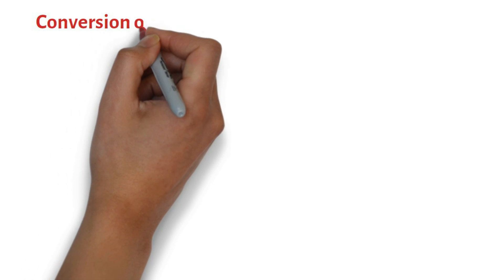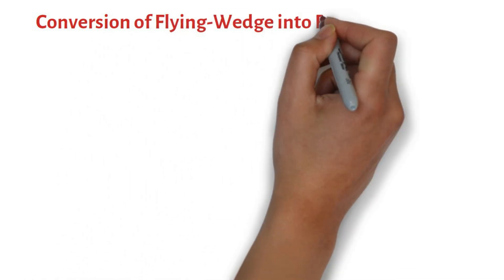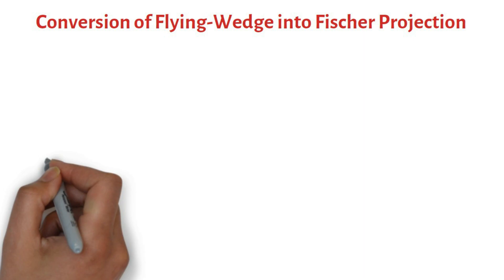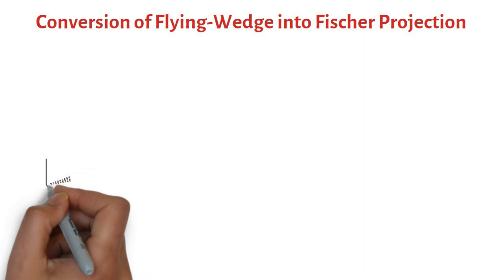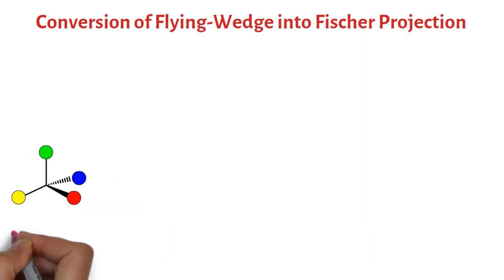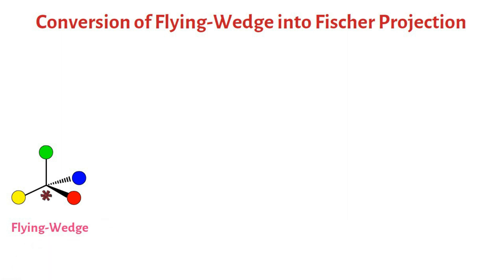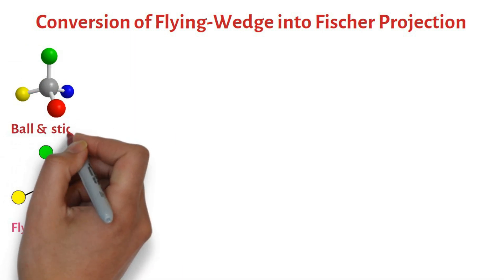We will first discuss conversion of flying wedge projection into Fischer projection. Consider this flying wedge projection of a molecule with one chiral center. The three-dimensional ball-and-stick model of this molecule will be something like this.